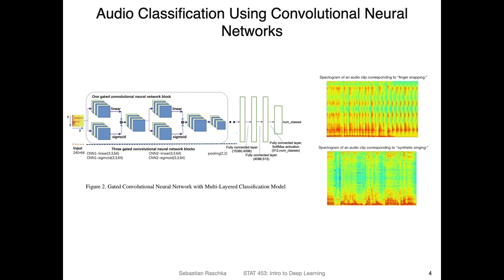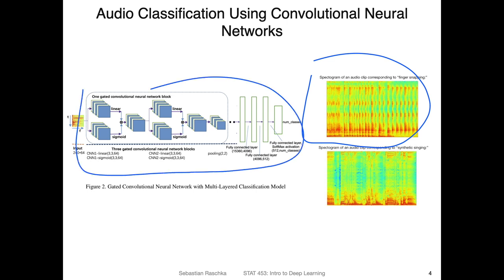In this first project, students converted audio signals into spectrograms — for example, spoken text — and then applied convolutional neural networks to classify different audio inputs and extract language from the audio clips. In this case it was actually finger snapping and singing, so distinguishing between different audio inputs.